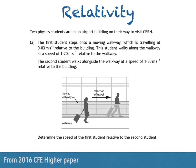Two students are in an airport building on their way to visit CERN — very lucky, I'd love to go to CERN. The first student steps onto a moving walkway which is travelling at 0.83 metres per second relative to the building. This student walks along the walkway at a speed of 1.20 metres per second relative to the walkway. The second student walks alongside the walkway at 1.80 metres per second relative to the building. We're then asked to determine the speed of the first student relative to the second student.